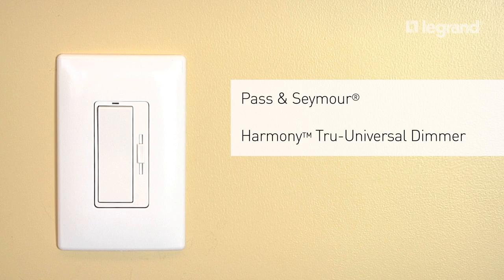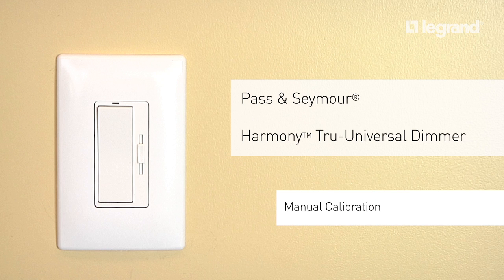Thank you for purchasing the Harmony True Universal Dimmer. This video will demonstrate how easy it is to manually make adjustments to the dimmer's minimum and maximum trim levels.